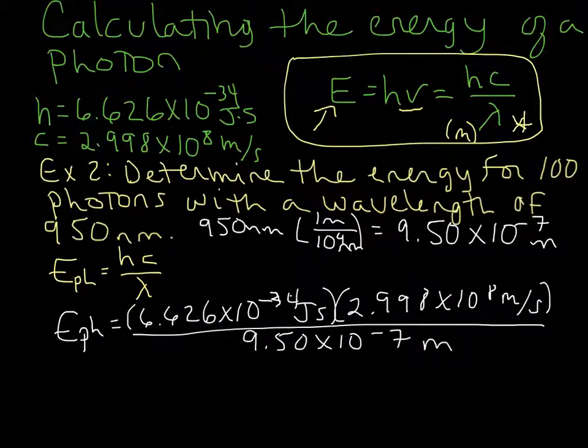So when we run that math, we are going to end up with 2.09 times 10 to the negative 19 joules.